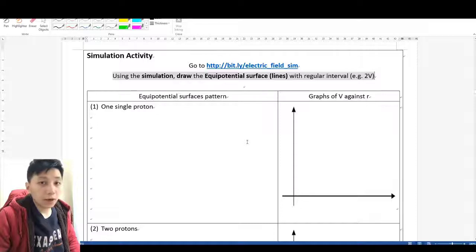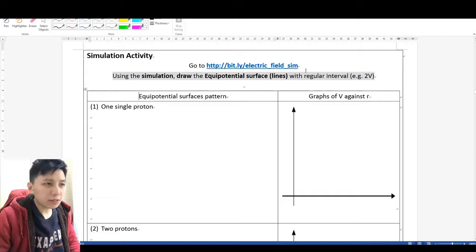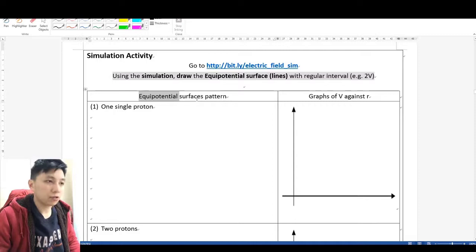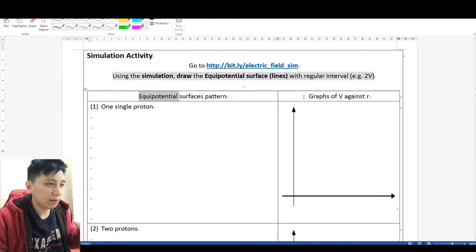Hi, let's have a simple and interesting simulation activity. We'll be using the simulation from PHET. I put the link here on the worksheets already, and we'll learn about something called the equipotential surfaces or equipotential lines, which is a line joining the same potential, and also see how that can help you to convert into the graph of electric potential against distance.